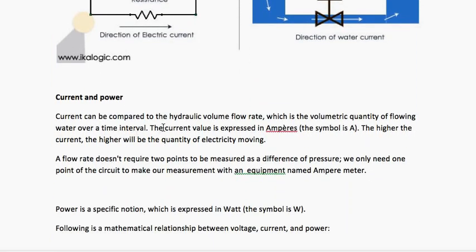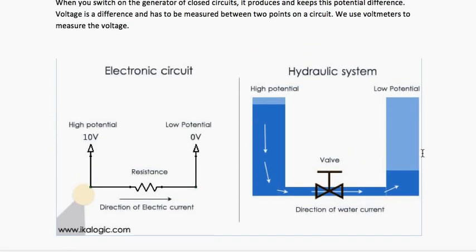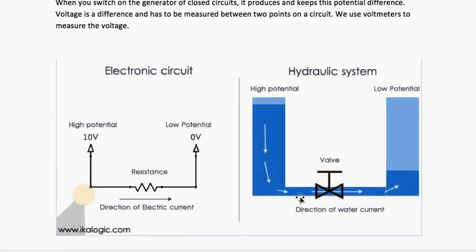The next is current and power. Current can be compared to the hydraulic volume flow rate, which is the volumetric quantity of flowing water over a time interval. The current value is expressed in amperes and the symbol is A. Let's come back to our hydraulic system and consider this small part.